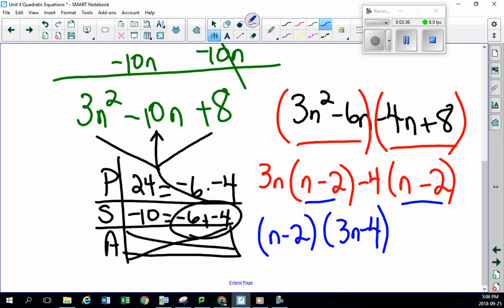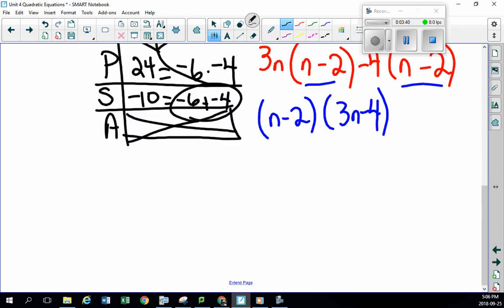Now, remember, in Math 20, when we solve things, we have to make sure that we let this equal to 0. So that means we have an n minus 2 equals to 0, and we have a 3n minus 4 equals to 0.